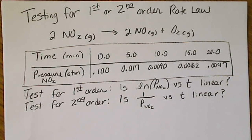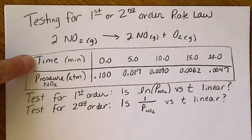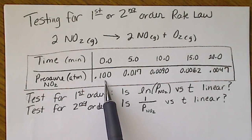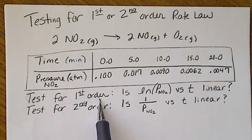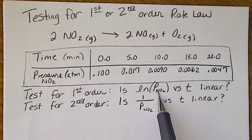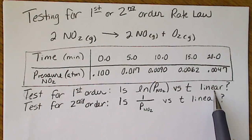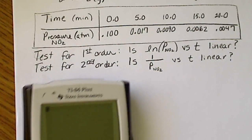We are going to test for first or second order kinetics to see if we can obtain either a first order rate law or a second order rate law for this particular equation. We've collected pressure changes versus time data. Since I know the outcome, I'm going to test for first order initially — testing whether the natural log of pressure versus time will be linear. To do that using the graphing calculator, I've got to plug in the data.